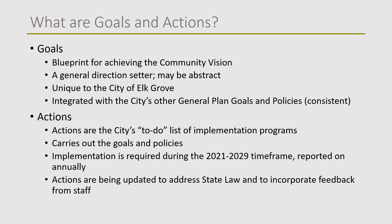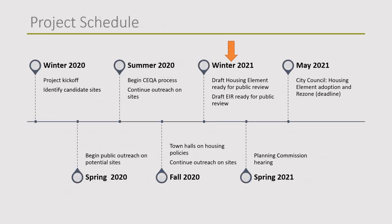In terms of the project schedule, this is essentially a multi-year effort that began in late 2019 and really got going in winter of 2020. Over the past several months we've been working through site identification, outreach efforts, and analysis of housing needs, culminating in the release of the document in February. We're heading into the public hearing process, beginning in April with Planning Commission hearings, then the City Council hearing by the May 15th deadline.